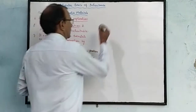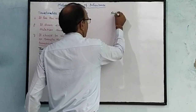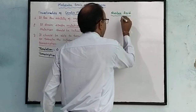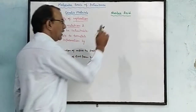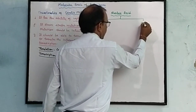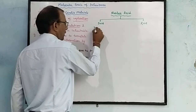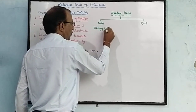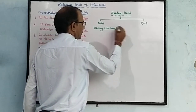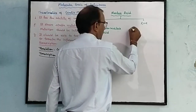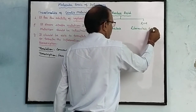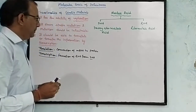Now we will discuss nucleic acid. What do you understand by nucleic acid? There are two types of nucleic acid: one is DNA and the other is RNA. DNA stands for deoxyribonucleic acid, and RNA stands for ribonucleic acid.